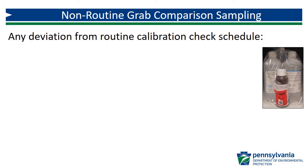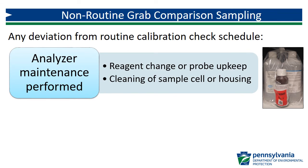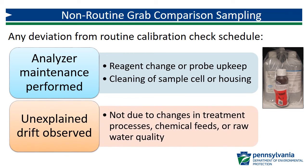Non-routine grab comparison sampling includes any calibration checks that occur outside of the routine schedule. These may include checks as a follow-up after maintenance activities have been performed on the analyzer — for example, changing reagent, maintenance of a sample probe, or cleaning the sample cell or housing may affect the analyzer readings. Performing a non-routine check verifies the accuracy of the calibration following these activities. Another situation where non-routine grab samples may be collected is when an online analyzer appears to be drifting significantly from its normal range of readings with no obvious explanation. If there have been no changes in treatment process, chemical feed, or raw water quality that correspond to a noticeable change in chlorine measurements, a non-routine comparative grab sample should be collected.